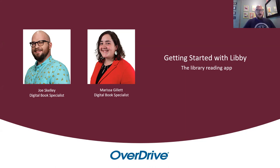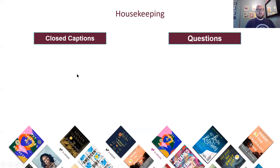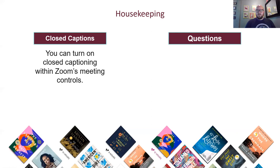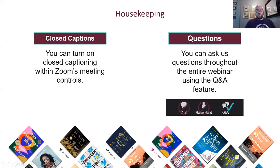Marissa and I both have a ton of experience showing off Libby, and we're going to keep that in mind and show you what you need to know. But before we dive in, just a few housekeeping items. You can turn on closed captions by tapping the box that says CC in your Zoom meeting controls. If at any point they get in your way, you can drag them with your mouse. Also in that Zoom meeting control bar is the Q&A button — chat and raise hand are disabled for this webinar, so questions are your way to reach us.